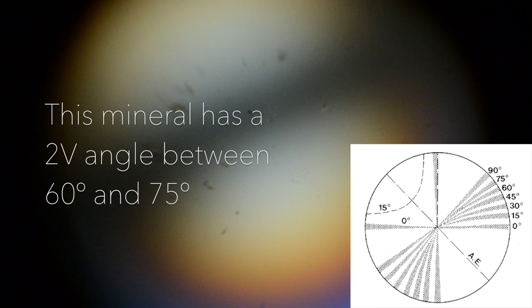When the 2V angle goes to 0, the two optic axes merge into 1, giving rise to a uniaxial material. This mineral has a 2V angle between 60 degrees and 75 degrees.